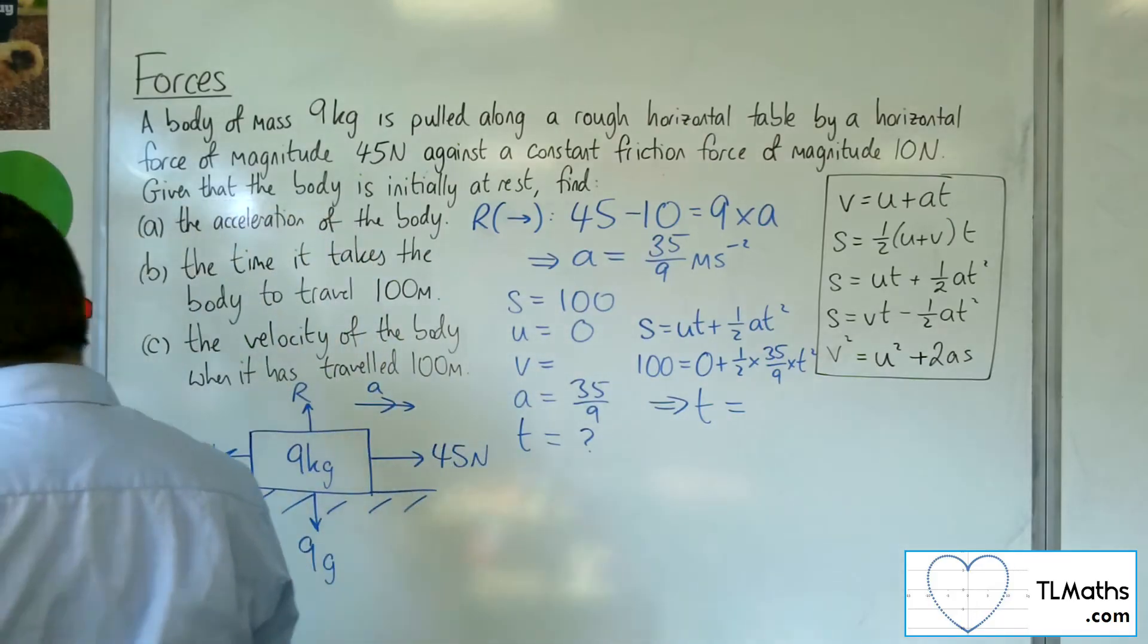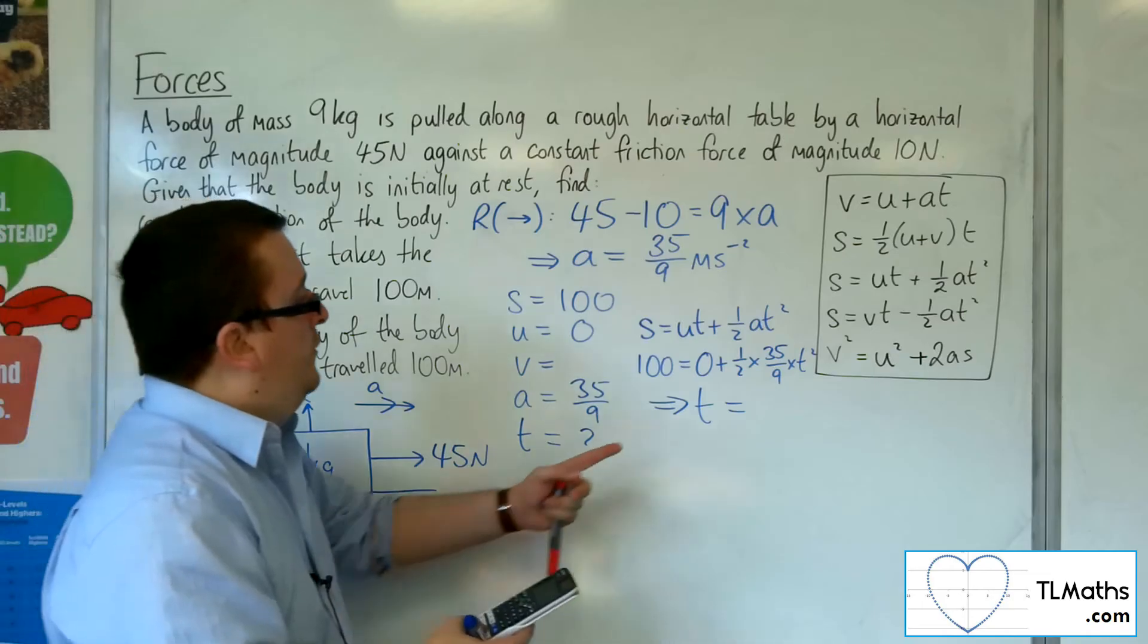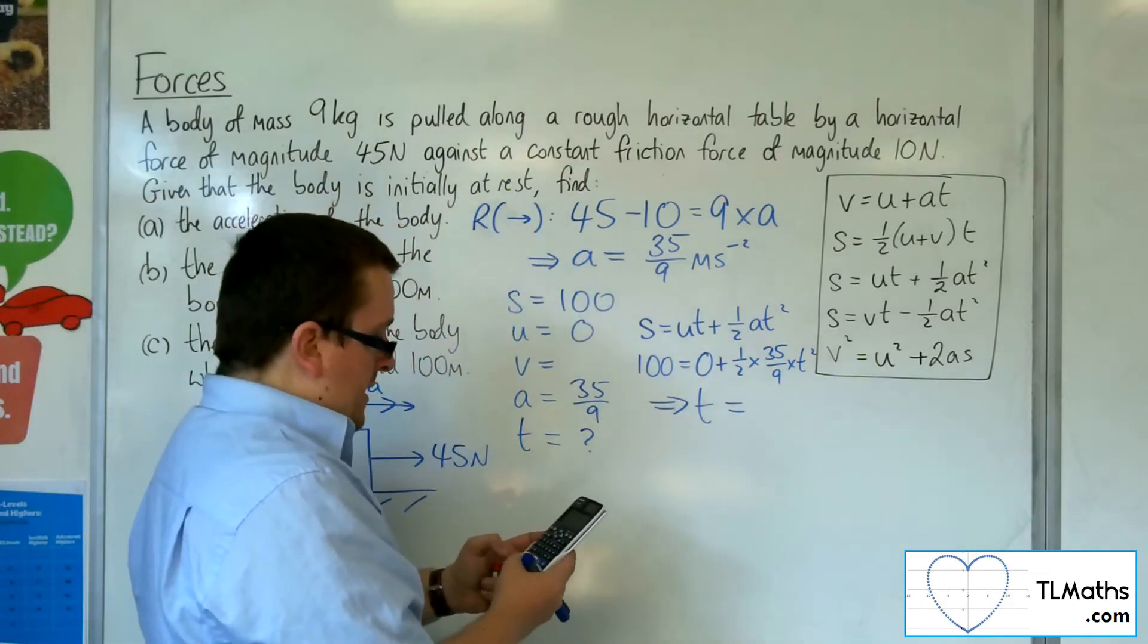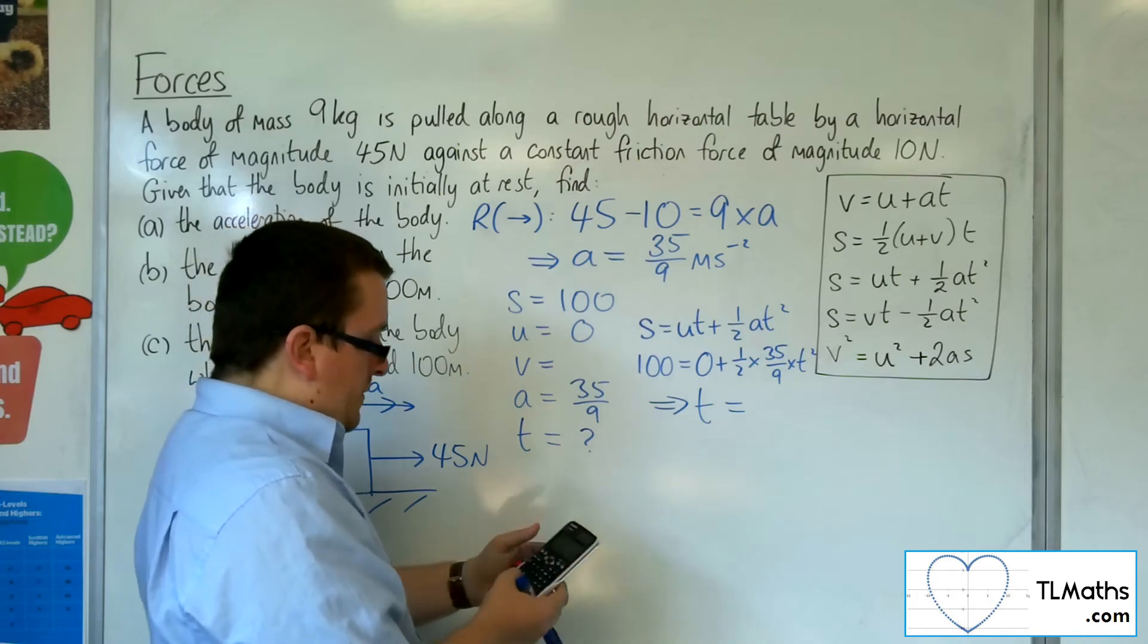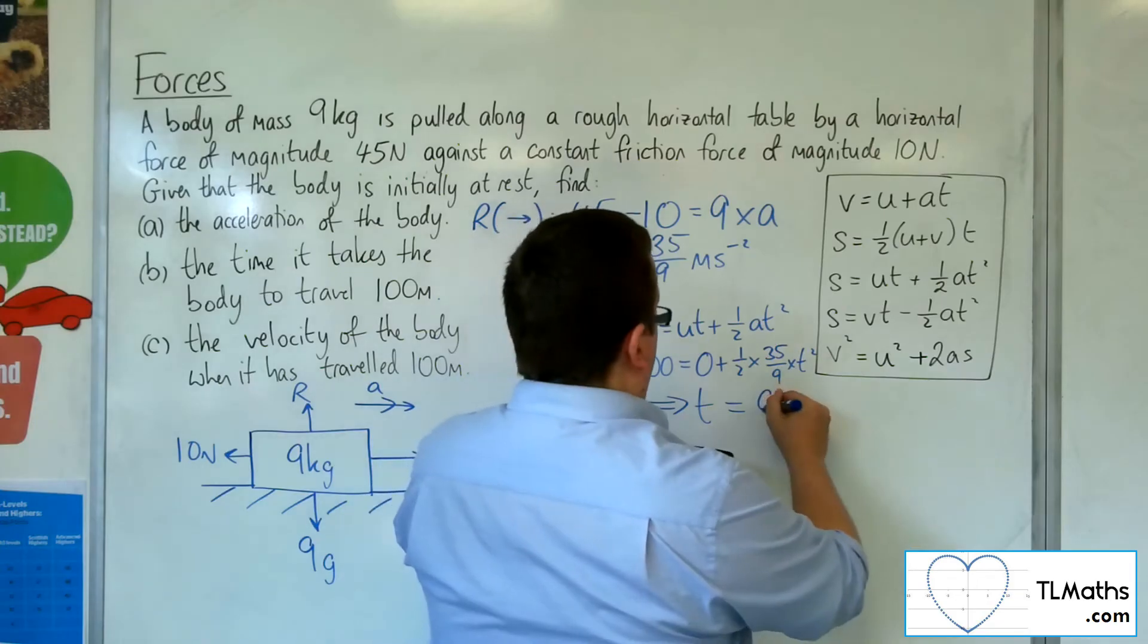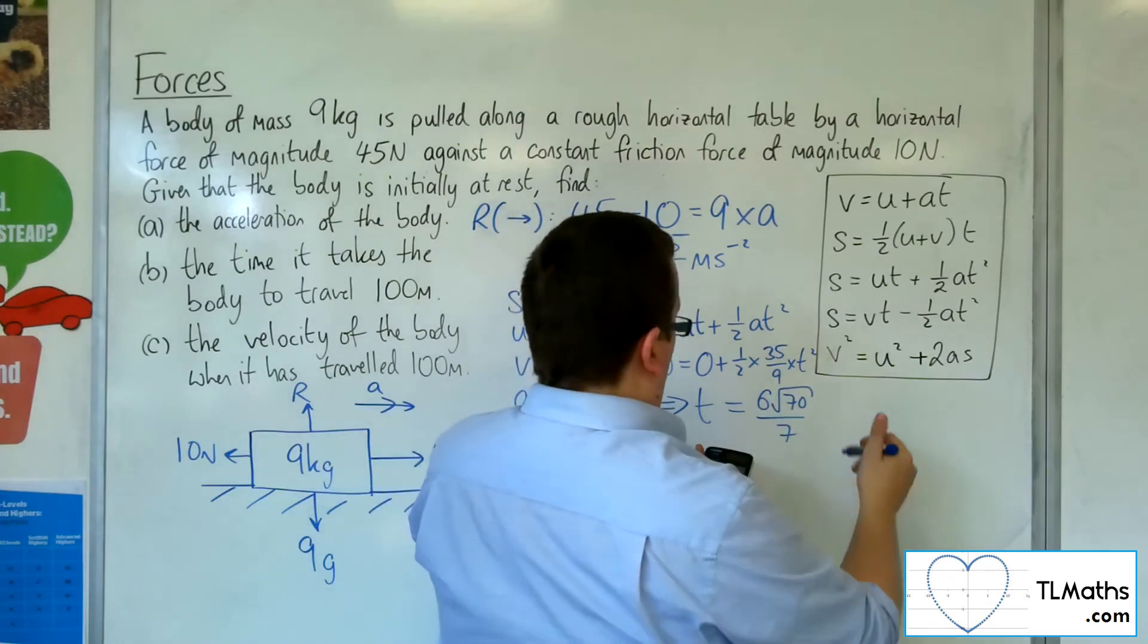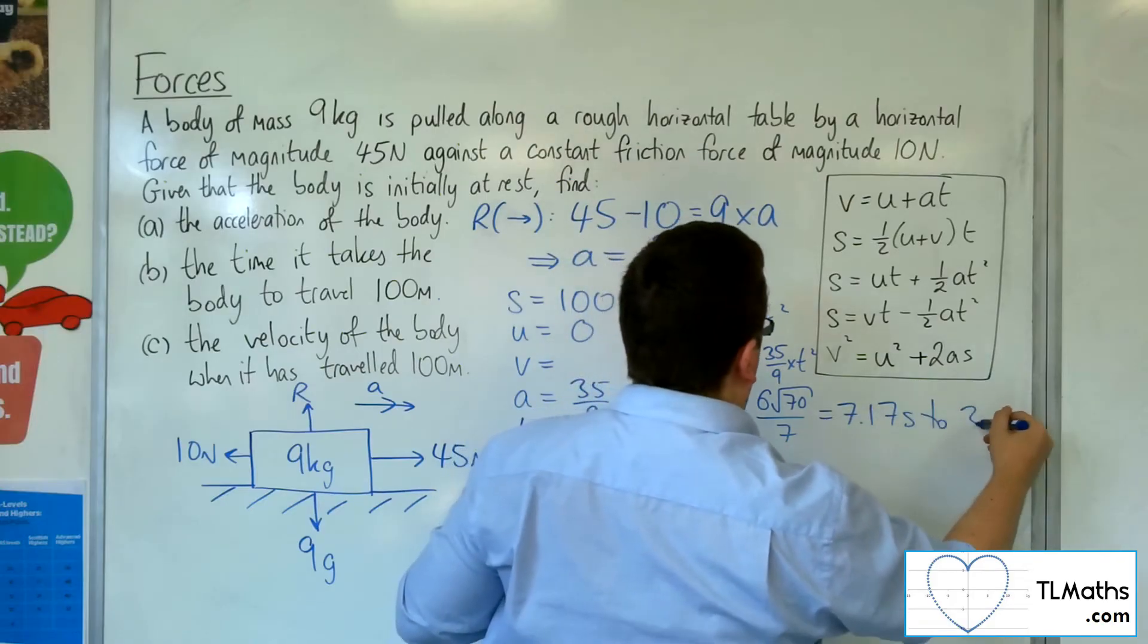OK, so we've got the 100. I'm going to times both sides by 2. Then I'm going to times both sides by 9 and then divide it by 35. So I get 360 over 7. So square root that and I get 6 root 70 over 7, which is 7.17 seconds to 3 sig fig.